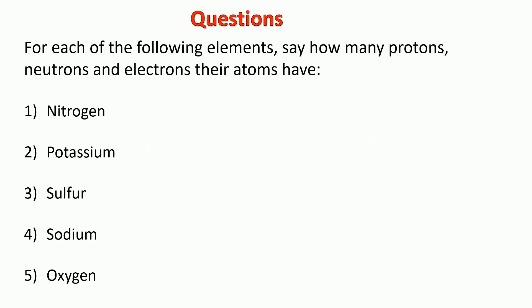Let's test your understanding. So for each of the following elements, say how many protons, neutrons, and electrons their atoms will have. So on a piece of paper, just write down your answers, pause the video, and then check back in in a few minutes time and see if you got them correct.